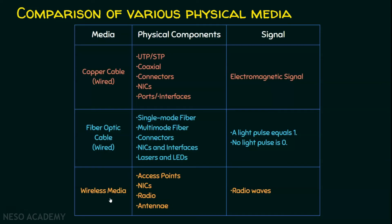In wireless media, we need an access point. If you turn on Wi-Fi on your mobile phone, it connects to your access point, which has a network at the back end, allowing you to connect to your network using wireless access points. We need access points and network interface cards. The wireless NIC converts data into radio waves — the signaling method used in wireless media. We also need radios to generate radio waves and antennae to send and receive.